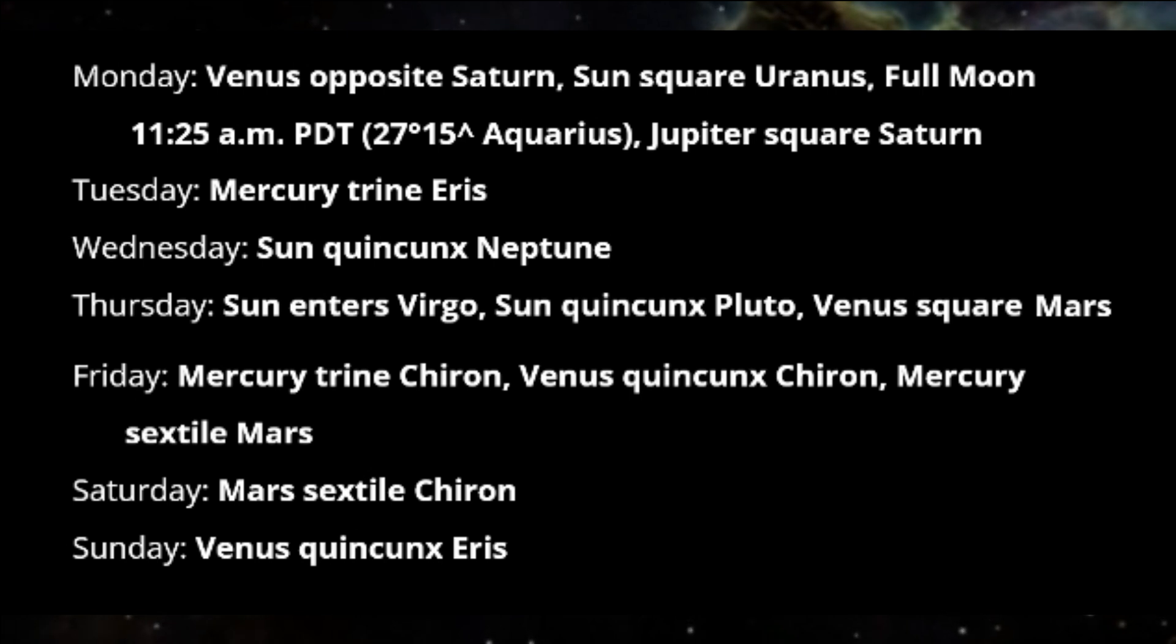On Saturday, Mars is sextile Chiron. We are able to be both direct and caring in conversation today, helping clear the air and enabling fractured relationships to heal.